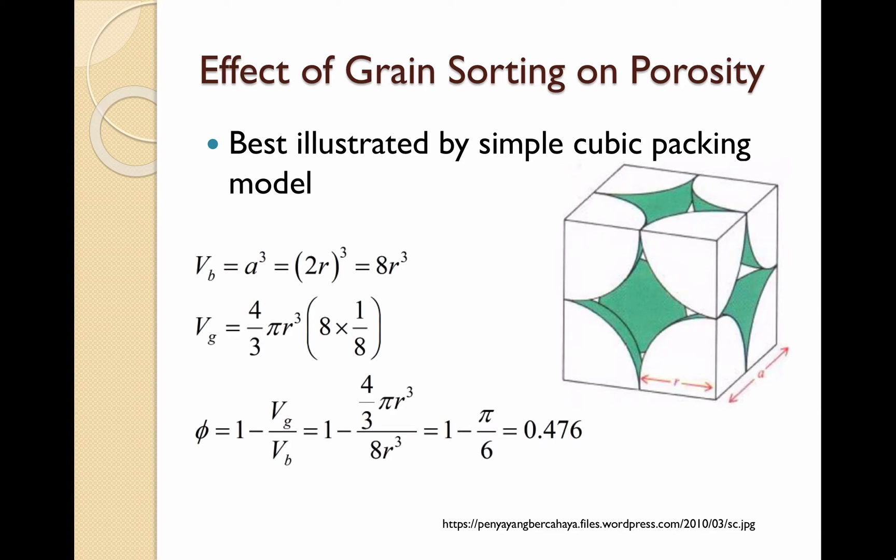Finding the volume of the grains is done by using the equation of a sphere multiplied by the number of segments that are one eighth of a sphere, as shown. Then, we will substitute the grain and bulk volume into the general equation, which gives us a porosity of 0.476.